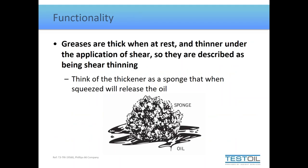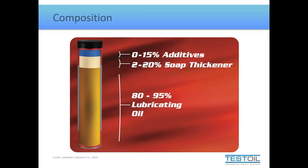In the overall functionality of grease, greases are thick when at rest — they don't flow or puddle. Once we mechanically shear them, they begin to thin, so we describe these as shear-thinning lubricants. The easiest way to picture this is to think of a grease as composed of a thickener and an oil. The thickener is like a sponge holding it all together; the oil is the lubricant. When we mechanically stress a grease, it's like squeezing the sponge to release the oil.